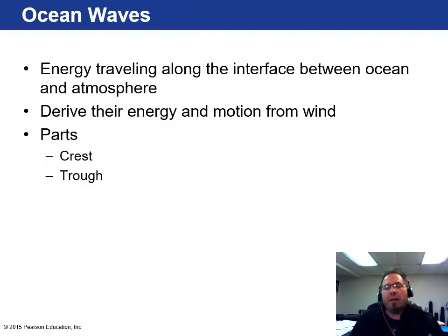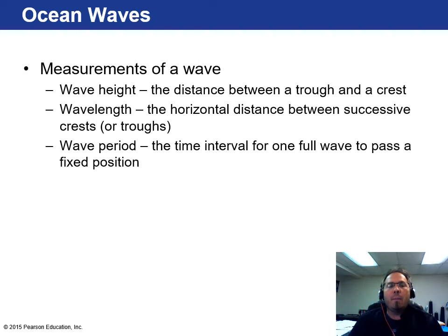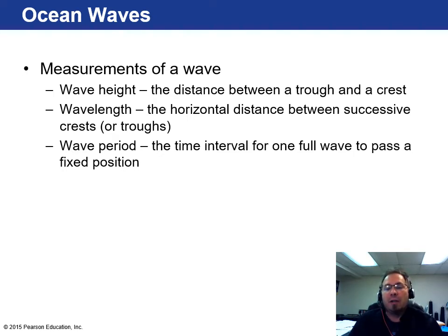Energy traveling across the ocean in the form of wind creates waves, derived ultimately from the sun. The sun heats the atmosphere, creating instability that generates winds, and those winds blow across the ocean creating waves. A wave has two parts: the crest, which is the high part, and the trough, which is the low part. Wave measurements include wave height, wavelength, and wave period — the time interval for one wave to pass a fixed position.